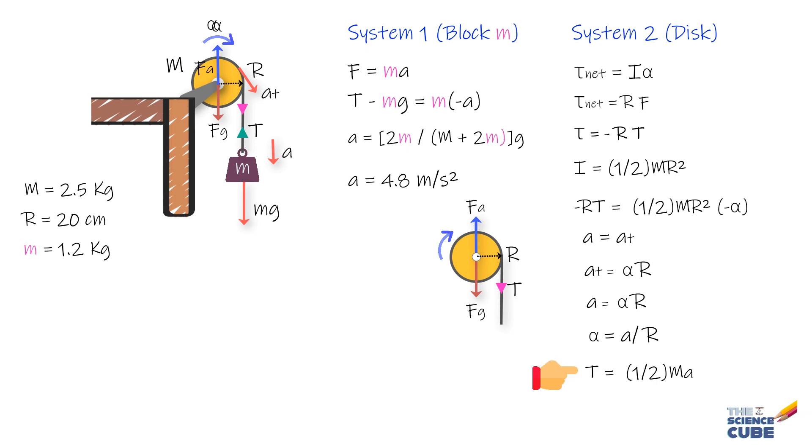Now we can also find T from this equation as T equals half into 2.5 into 4.8, which equals 6 newtons. And finally,